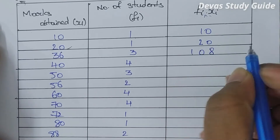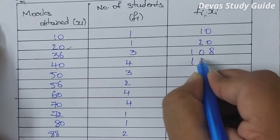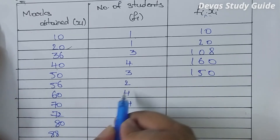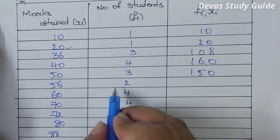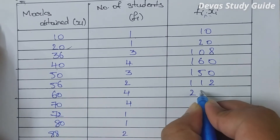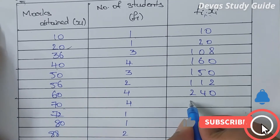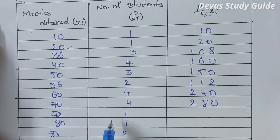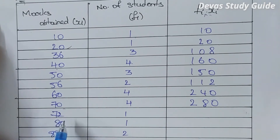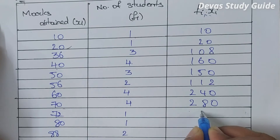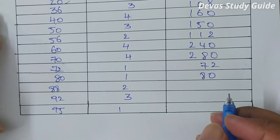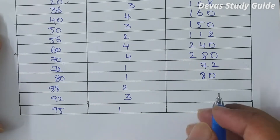Calculating the fixi products: 1×20 = 20; 3×36 = 108; 4×40 = 160; 3×50 = 150; 2×56 = 112; 4×60 = 240; 4×70 = 280; 1×72 = 72; 1×80 = 80; 2×88 = 176; 3×92 = 276.